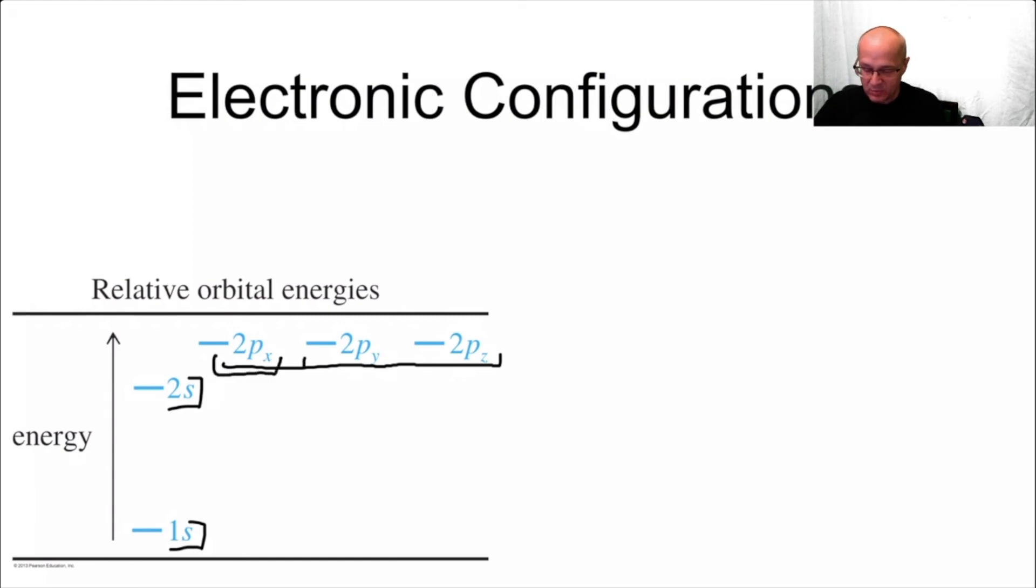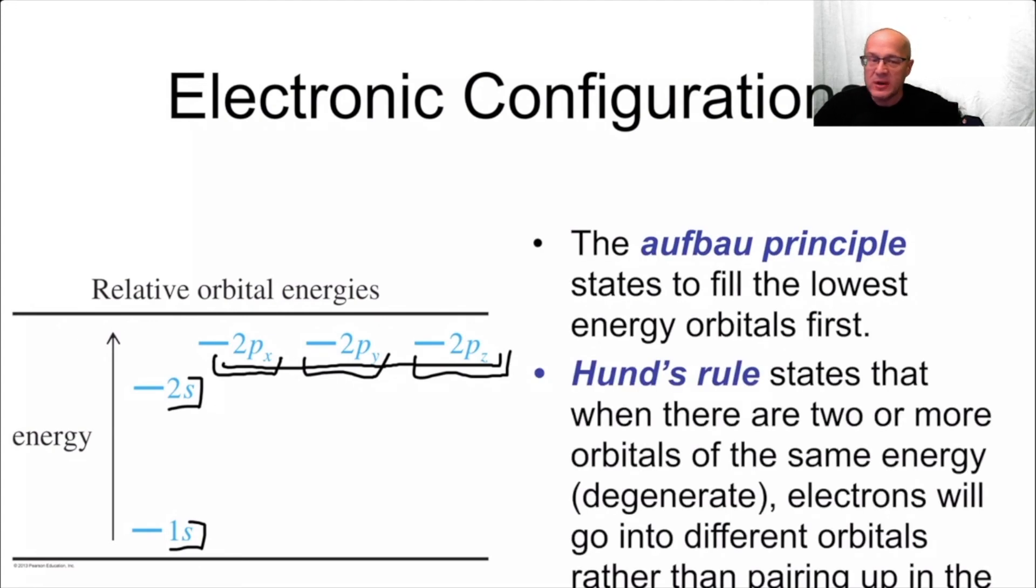Now, notice the 2p orbitals are slightly higher in energy. So therefore, they fill last. They don't fill first. And here's a couple of definitions you might want to remember from general chemistry: Aufbau principle and Hund's rule.